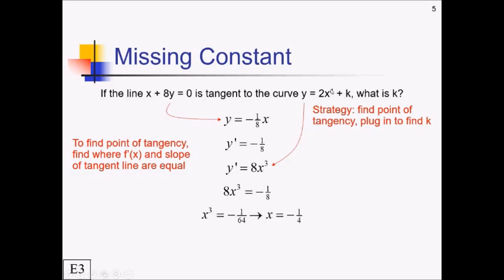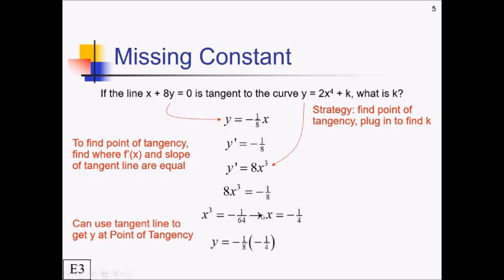That gives us an x-value, but we still need a y-value to figure out k. We can't get it from the original equation with the unknown k, but the y-value at the point of tangency is the same on the tangent line — so we can use the tangent line. Plugging x equals negative 1/4 into y equals negative 1/8 x gives us a y-value of positive 1/32.